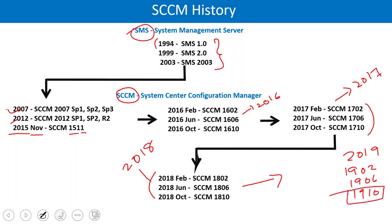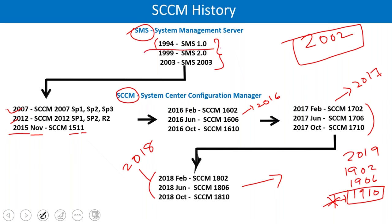In 2019 they released versions 1902, 1906, and 1910. This year 2002 was released but it is still in technical preview, so the latest production version is 1910. SCCM started in 1994, and the latest version is 1910 — almost 25 years in the market.